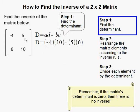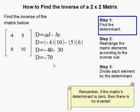So that's negative 4 times 10 minus 5 times 6, which gives me negative 40 minus 30, which is negative 70. Alright, so the determinant is equal to negative 70.